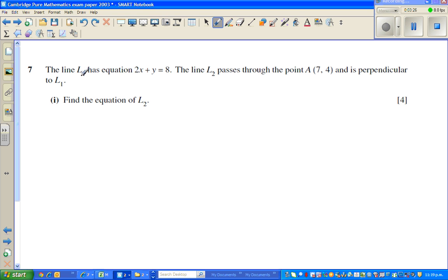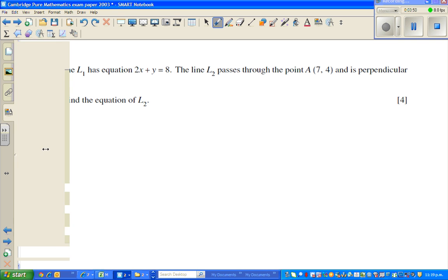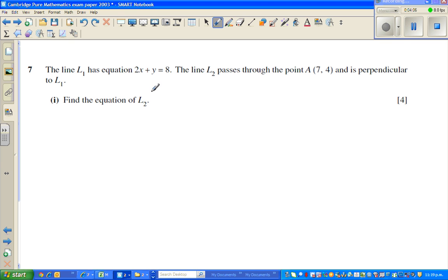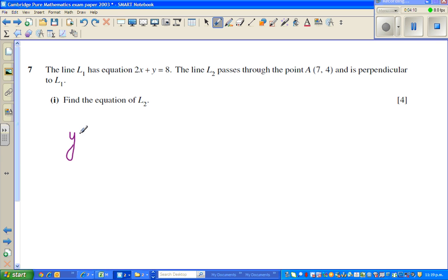Now let's look at this question. The line L1 has an equation 2x plus y equals 8, and line L2 passes through point 7, 4 and is perpendicular to L1. Always good to draw a sketch of the graph. I'm going to write this equation in gradient intercept form, so L1 can be written as y equals 8 minus 2x.